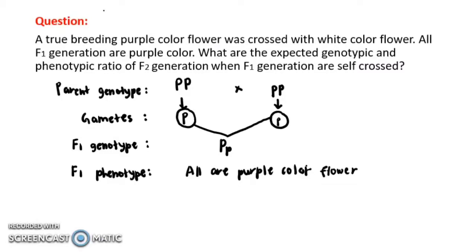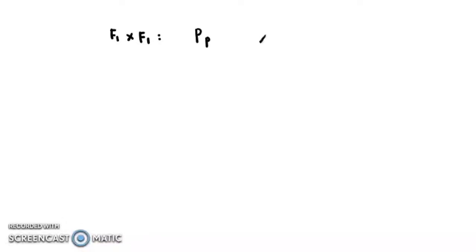This is for F1. But the question wants you to show the expected genotypic and phenotypic ratio of the F2 generation when F1 is self-crossed. So what you have to do next is show the self-cross of the F1 generation — write it as F1 cross F1. F1 is heterozygous (Pp), crossed with another heterozygous (Pp).